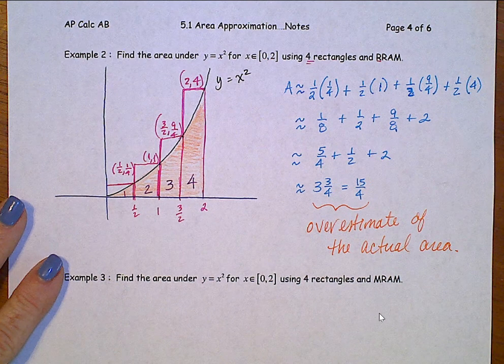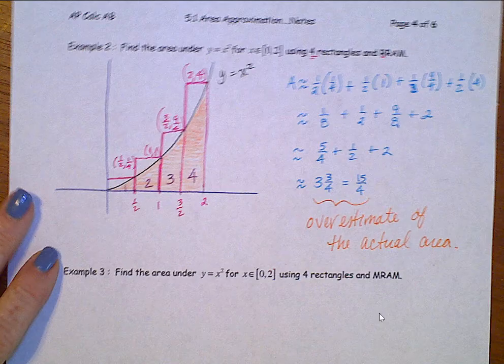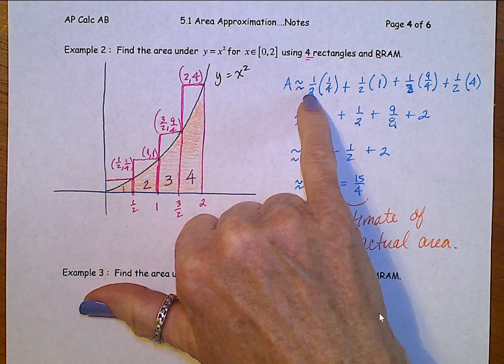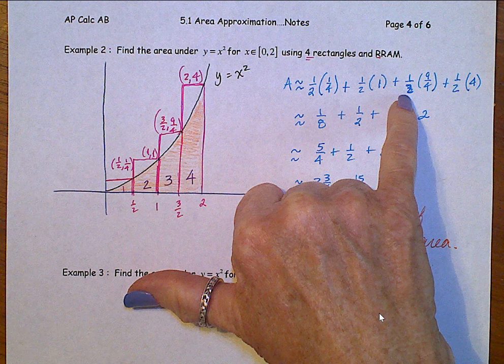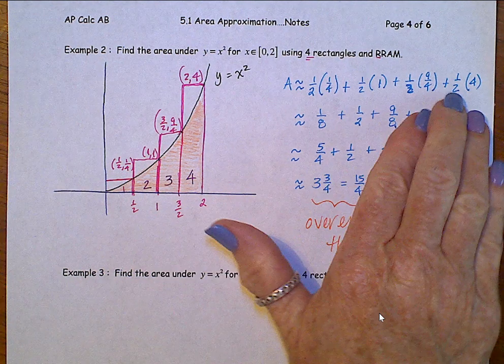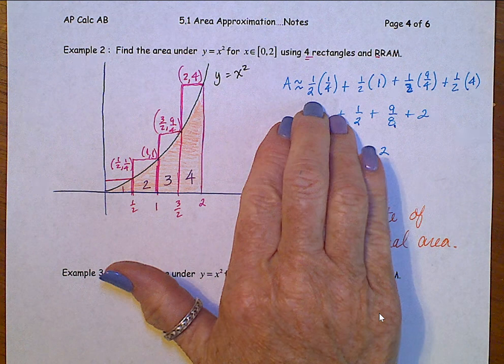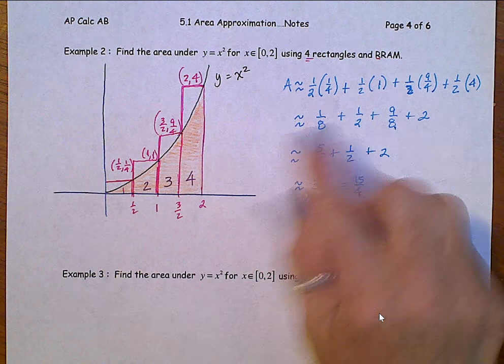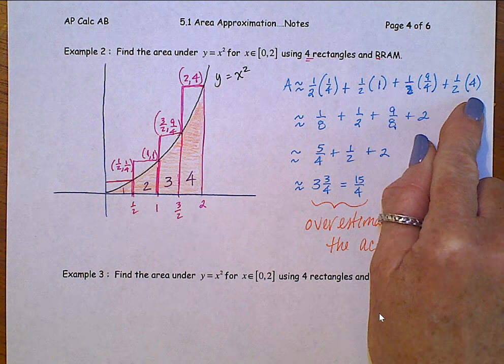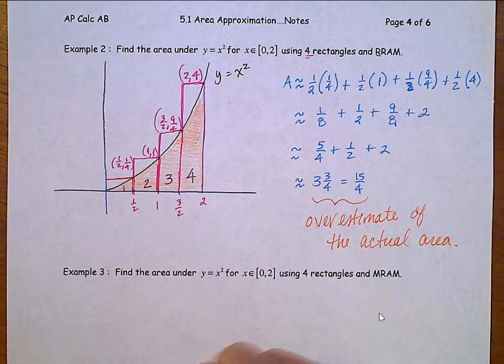Alright. Okay, one thing I want you to notice before we do this third one, see this half, this common width, that's in all of them, all of the areas of the rectangles. Could I have just factored that half out, and written that half once, and then add all the heights? Yeah, we can. Keep that in mind, because we're going to do that on the next one.